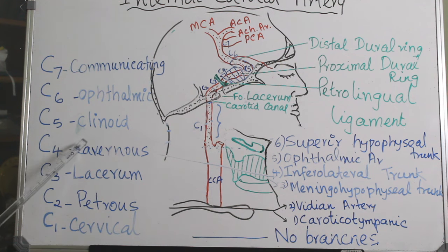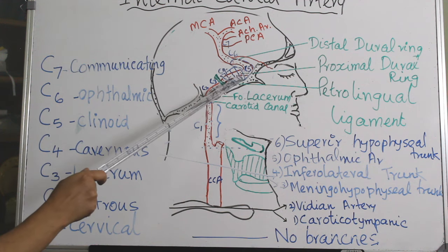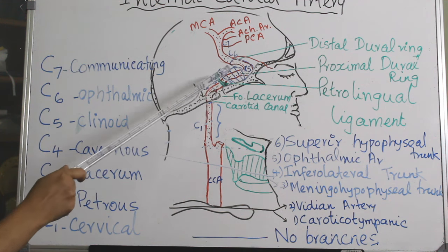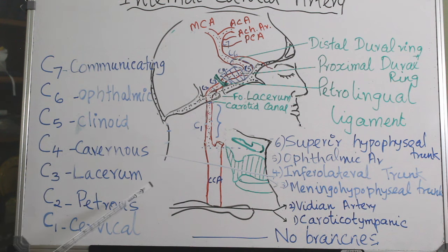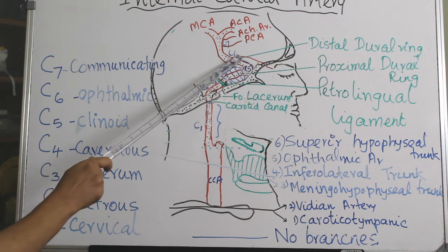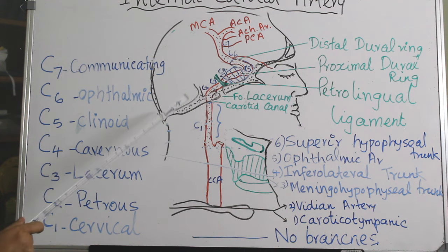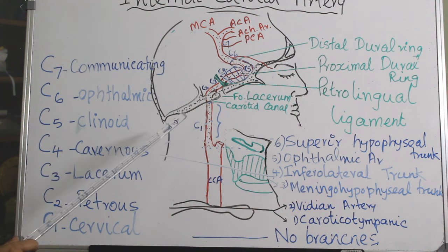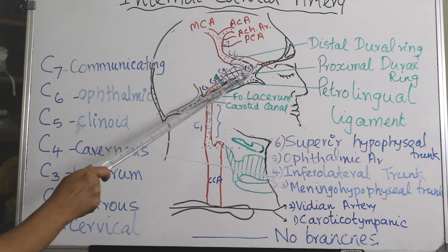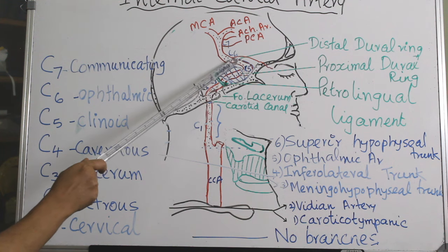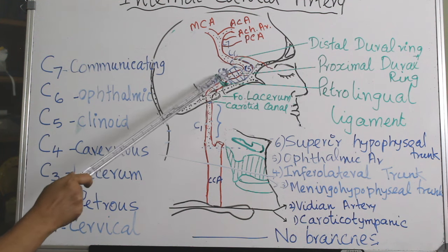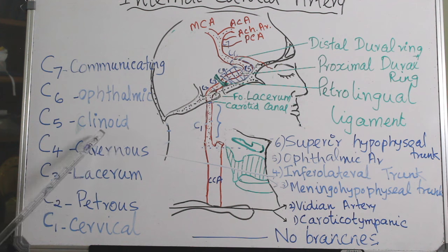C5 is the clinoid segment, from the proximal dural ring at the anterior clinoid process to the distal dural ring, which can also be taken as the roof of the cavernous sinus. So from the anterior clinoid process to the roof of the cavernous sinus is the C5 or clinoid segment.